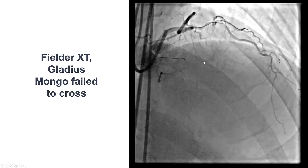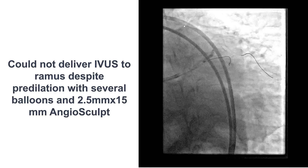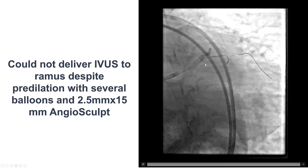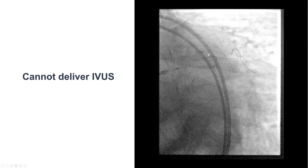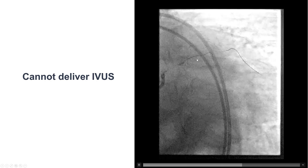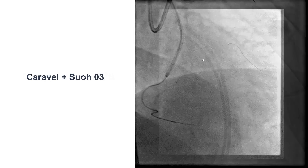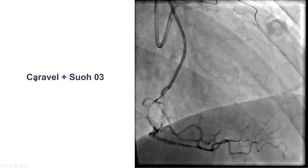We did multiple attempts to cross into the LAD using various guidewires without success. We used a dual-lumen microcatheter also without success, and then we tried to deliver the intravascular ultrasound catheter to the Ramus to clarify the proximal cap for the LAD, but we were unable to deliver it despite predilatation including with an AngioSculpt balloon. The IVUS catheter just could not advance over the Ramus or into the diagonal. So after multiple attempts we decided to switch to the retrograde approach.